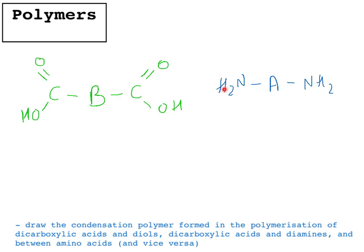So here, one of these Hs will join up with this OH and water will be formed and the rest of it will polymerise. So we'll start off with the carboxylic acid group. The OH is coming off, remember. So that's going to join up there. B, C, O, O, H. But no OH.